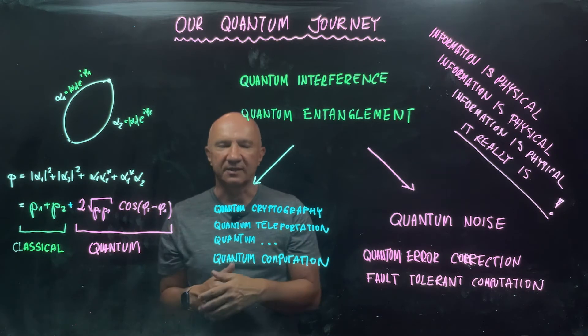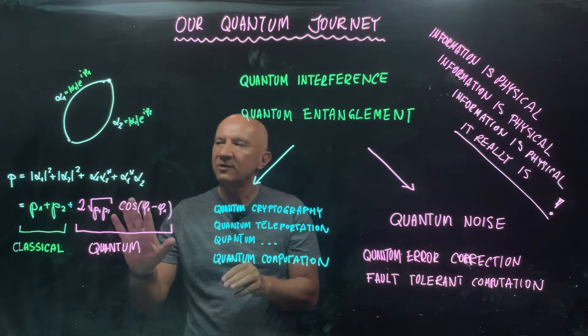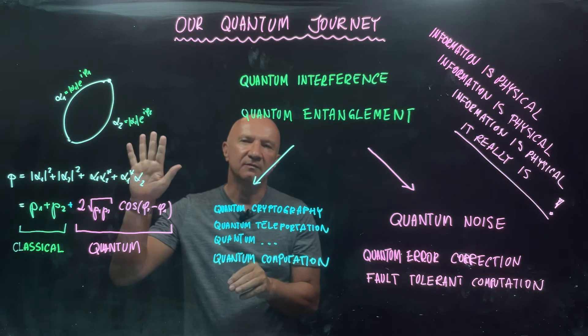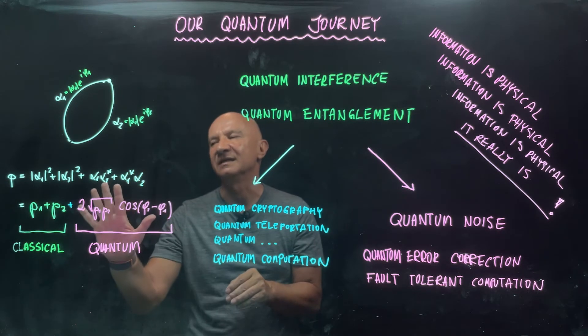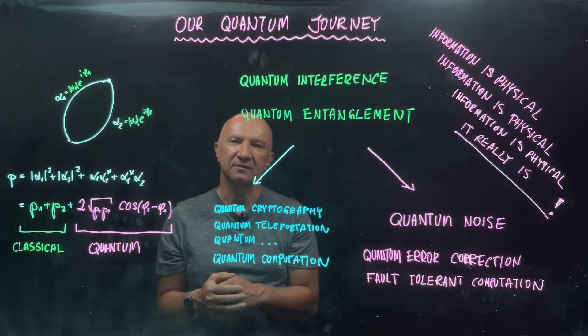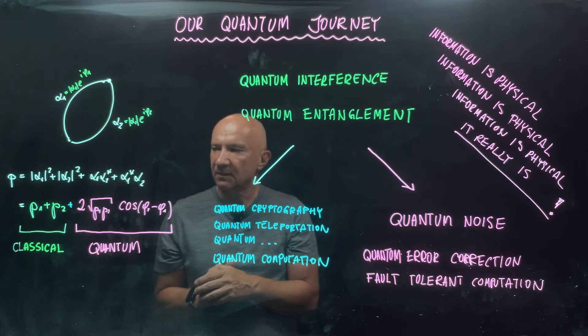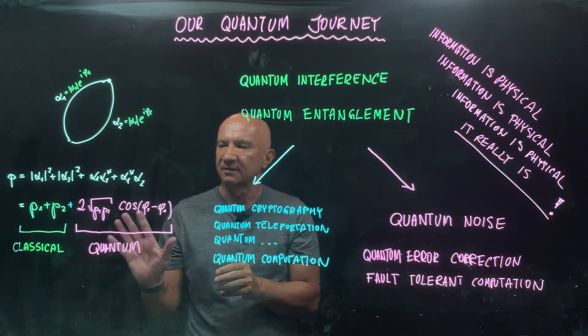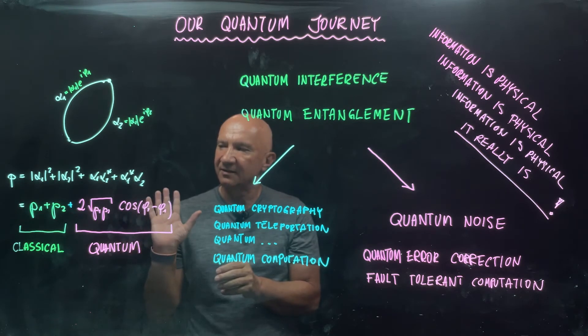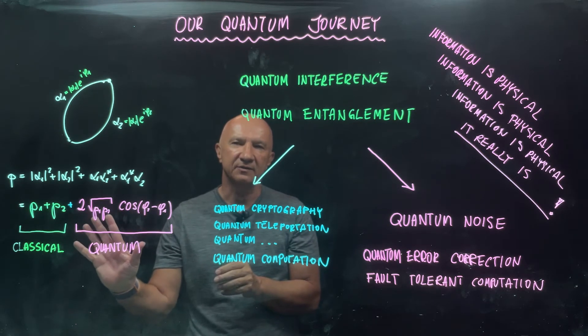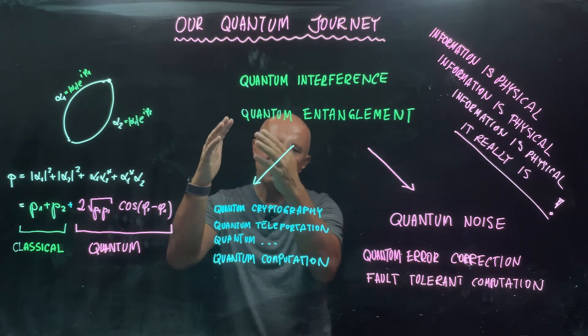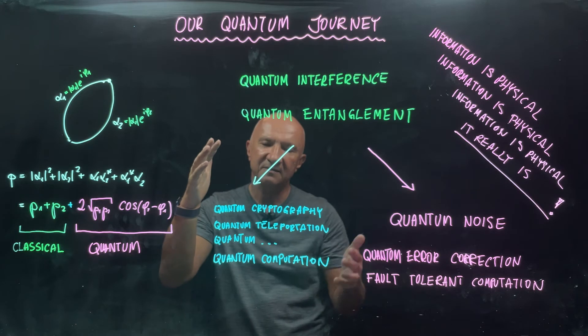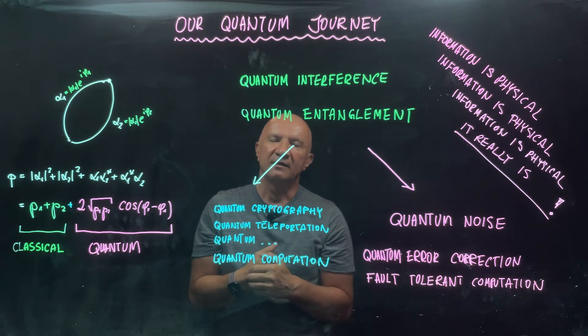So we introduced tensor products. So you can then elevate it to more sophisticated mathematics, but at the bottom of quantum theory, there's a very simple calculation of this type. So we then discussed quantum advantages.